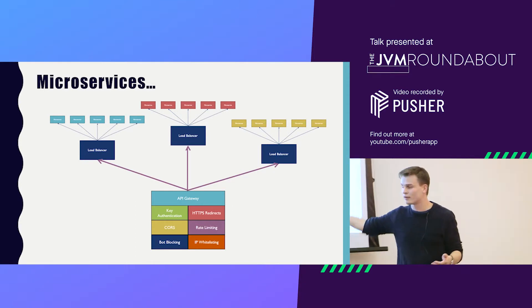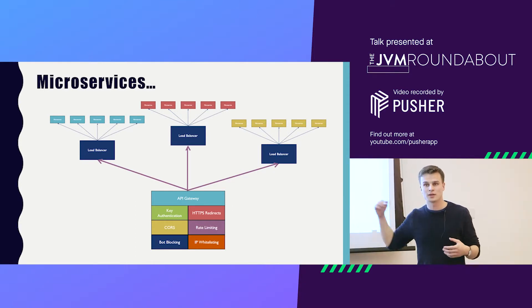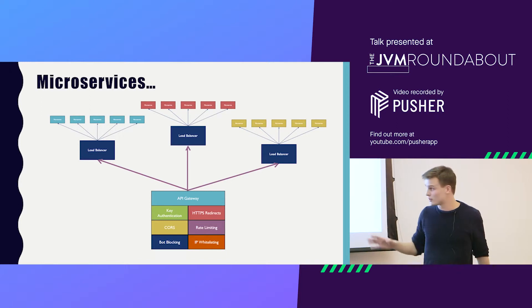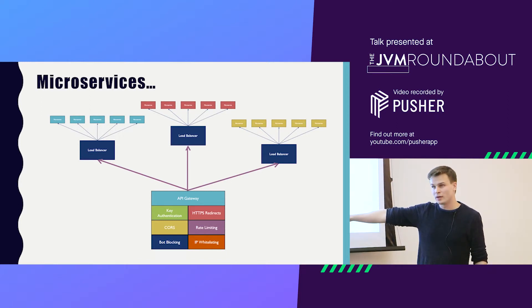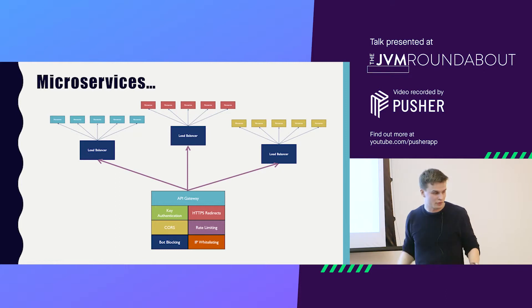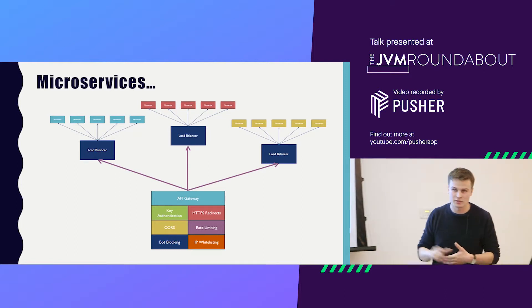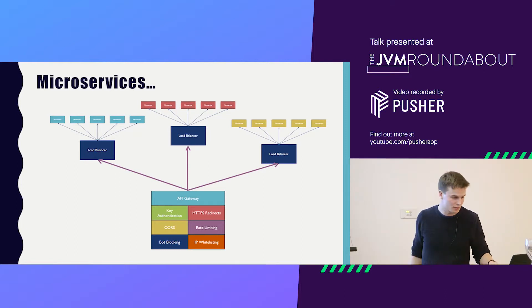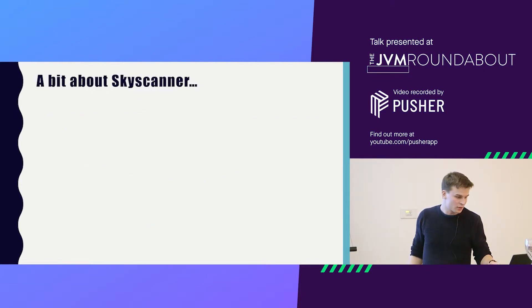You can imagine this is traffic coming into your website, or your service, or whatever it is. We implement all of these things at the gateway level — authentication, rate limiting, bot blocking, CORS — and then every microservice is left to handle its own specific logic.